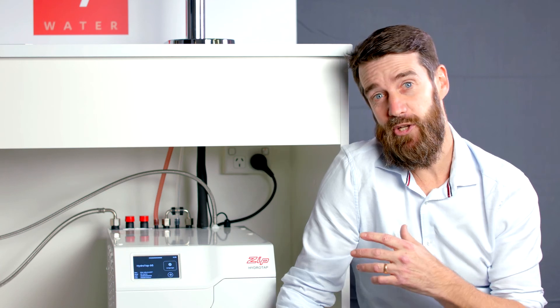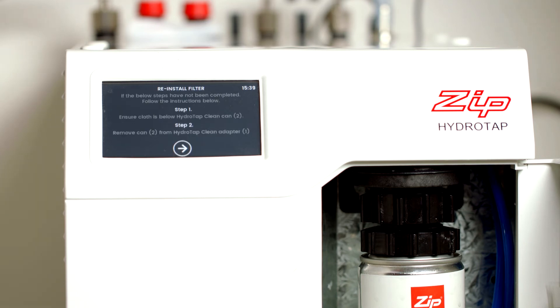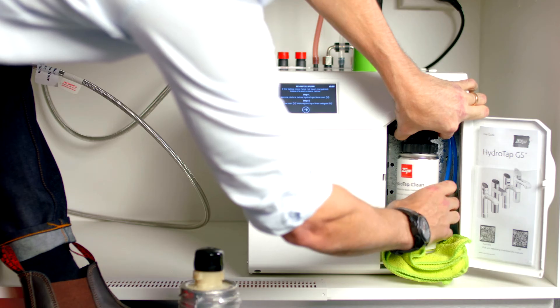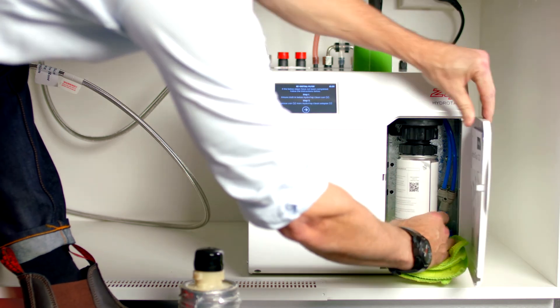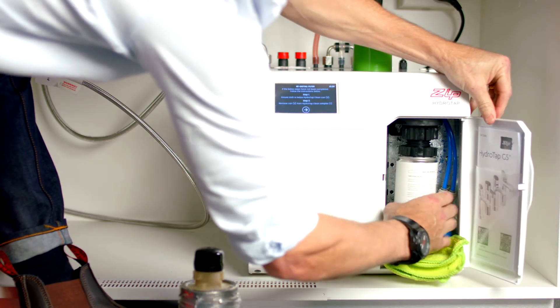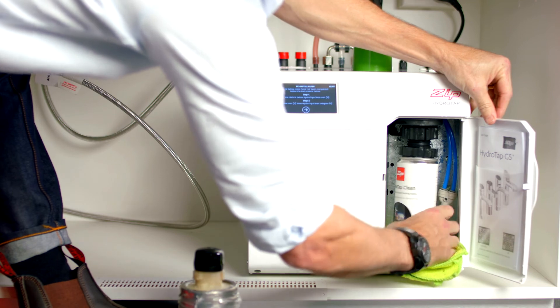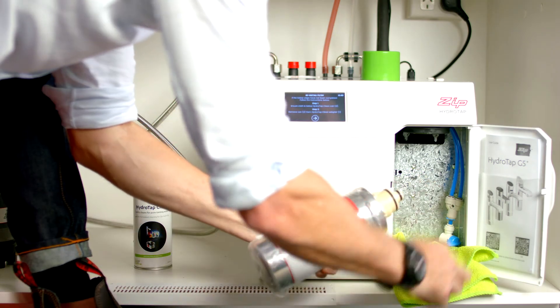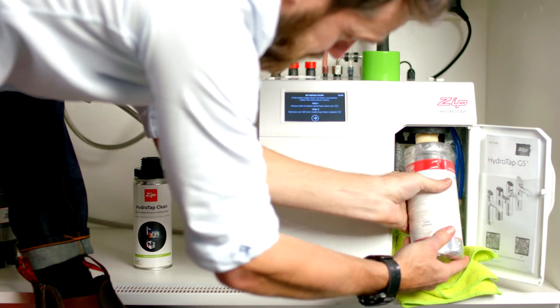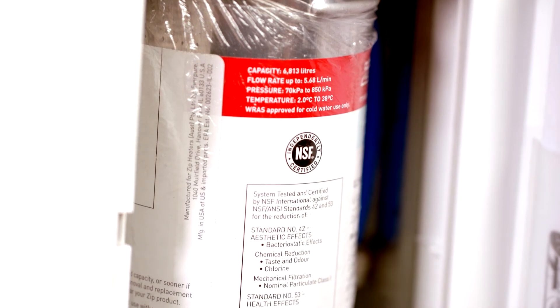Once the HydraTap clean process is complete the chilled and sparkling water tanks will flush out the cleaning solution. Once the flush has been completed the HydraTap will ask you to remove the HydraTap clean can and adapter. Remove them both separately can first then adapter. Both these can be put into recycling. Next remove the dust cap from the filter and reinstall the filter to the filter head. Mop up any spilled water with the cloth and remove the cloth.